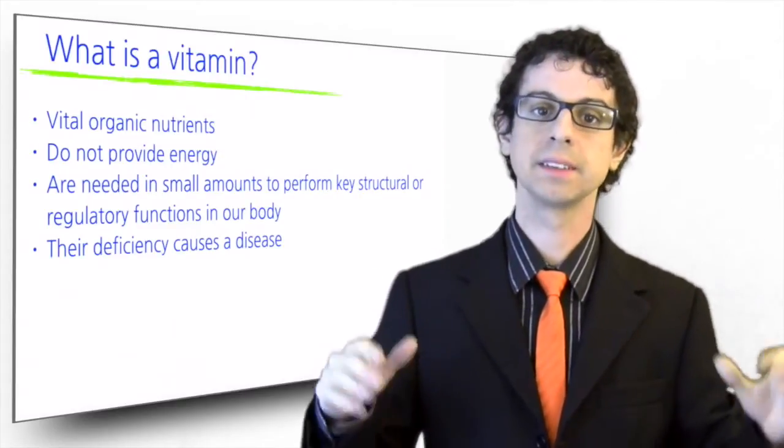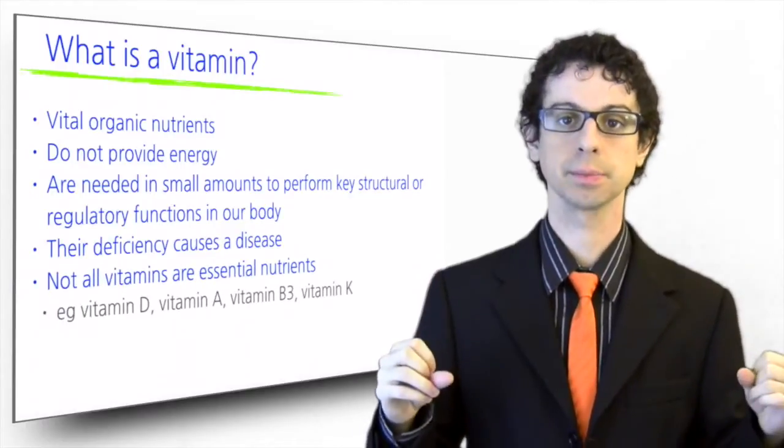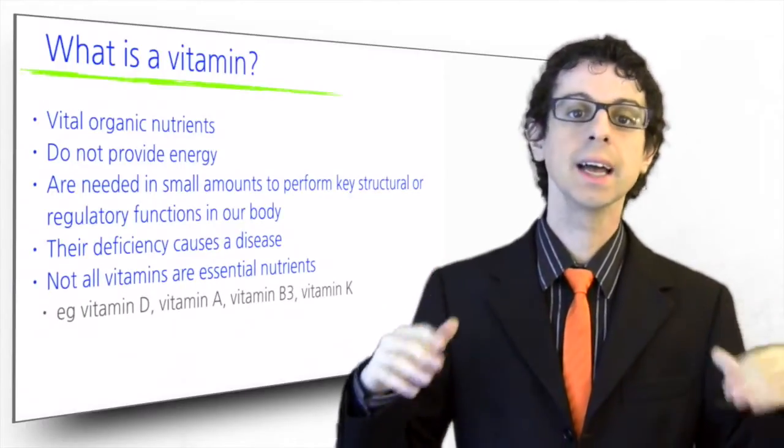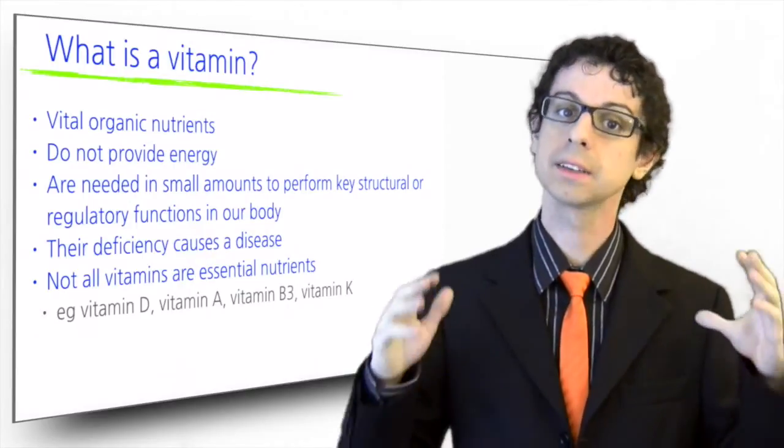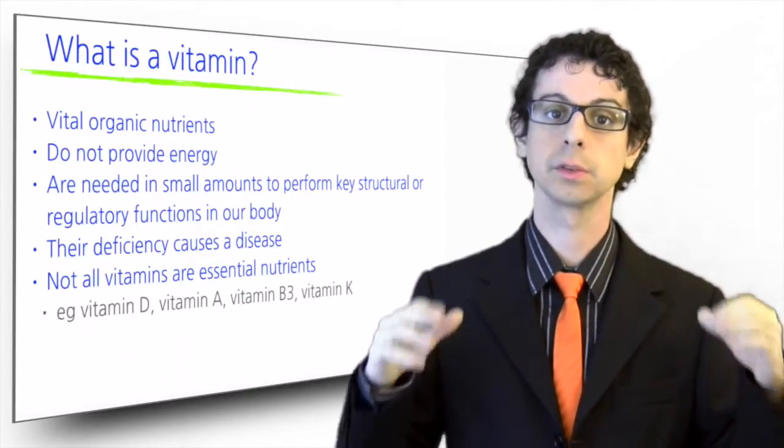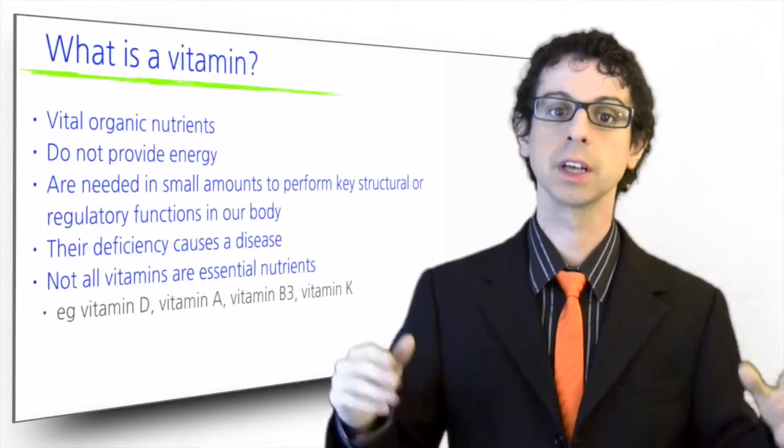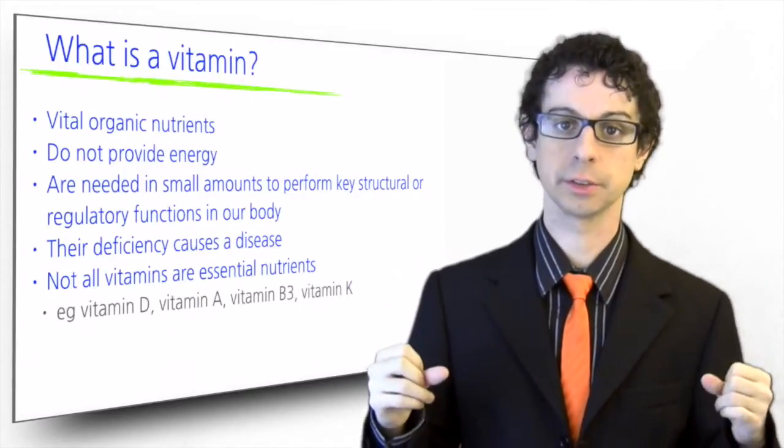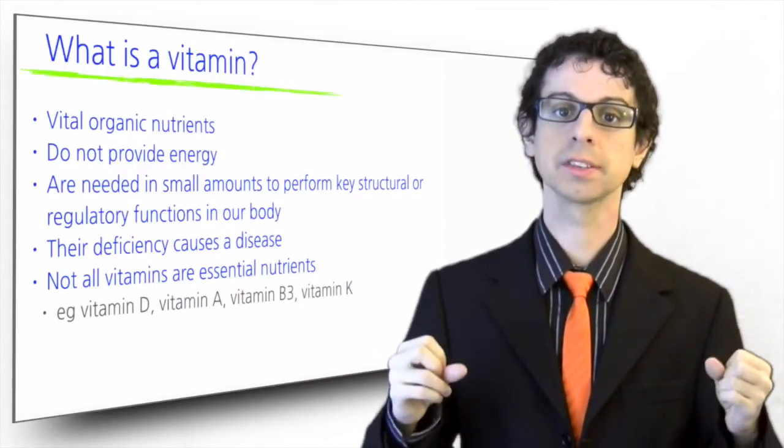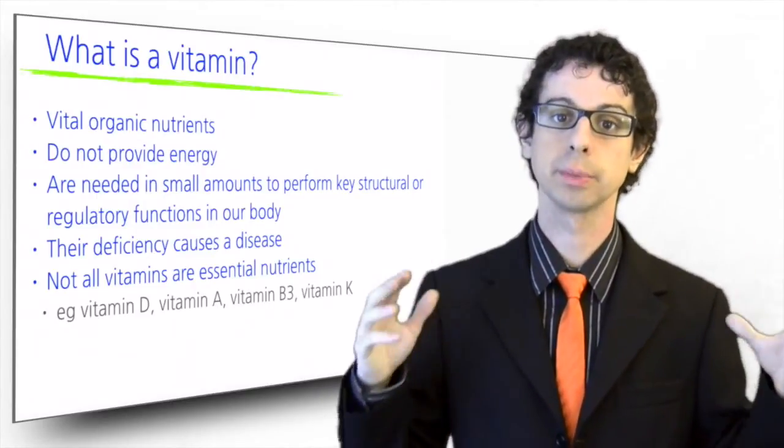While all the vitamins are necessary molecules for our body, not all of them are essential nutrients. For example, vitamin D can be synthesized directly in our body from cholesterol, as long as our skin is exposed to adequate sunlight. Vitamin A is semi-essential because it can be derived from carotenoid precursors found in some fruits and veggies. Niacin is also semi-essential because it can be derived from the amino acid tryptophan.